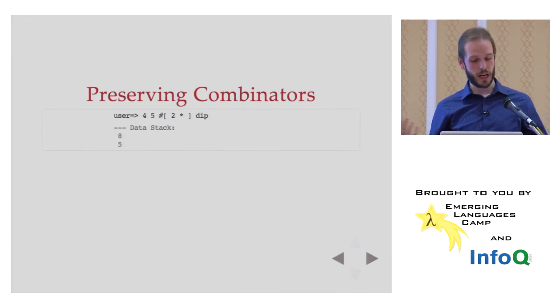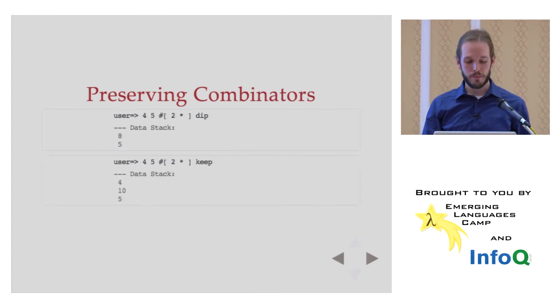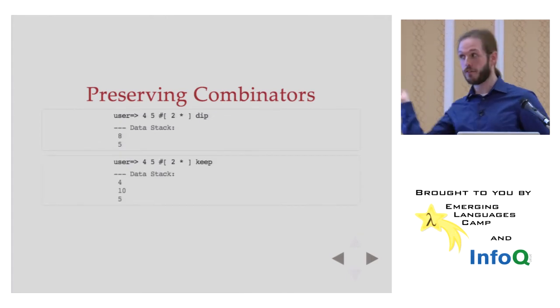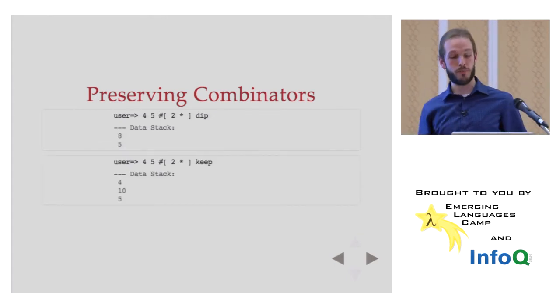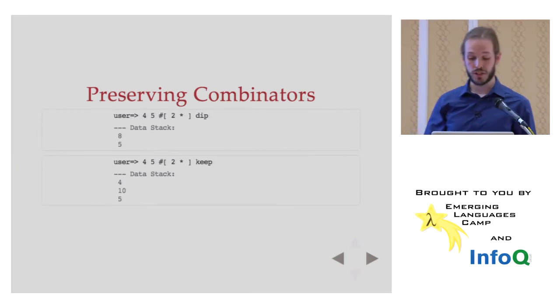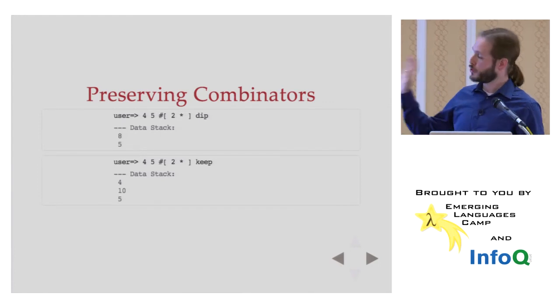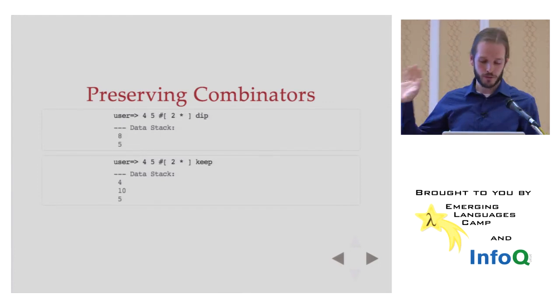So let's look at these examples and see what that might look like. Again, I'm going to use simple math so we can kind of reason about the stack in our heads, maybe. Preserving combinators. I put four and five on the stack and I have a quotation that times the top thing by two. Dip is going to take the five off of the stack, invoke that two times quotation, which gives us eight, and it's going to put five back on the stack, the first item. So dip takes the second item off, invokes the quotation, puts it back on. This is a preserving combinator, preserve the five. The other preserving combinator is keep, which instead of taking that five off, keeps it there, invokes the quotation, and puts it back on. So here we had four and five again. We invoke two times, gives us ten, and we put the original value of five back on the stack.